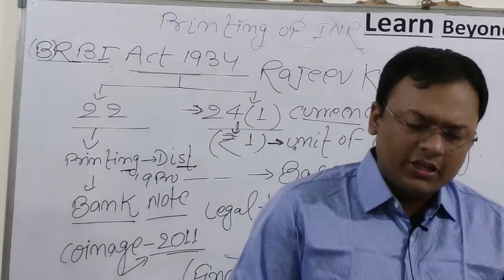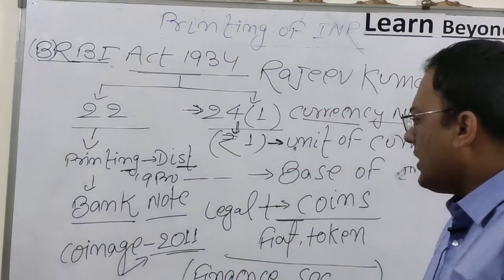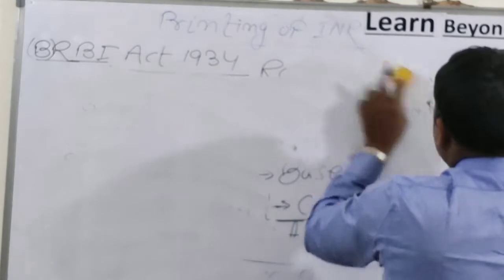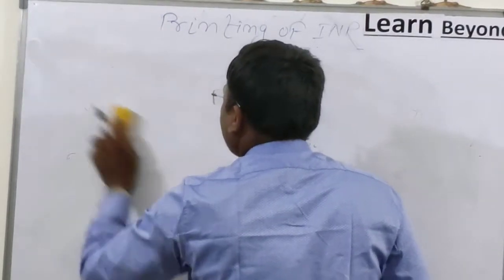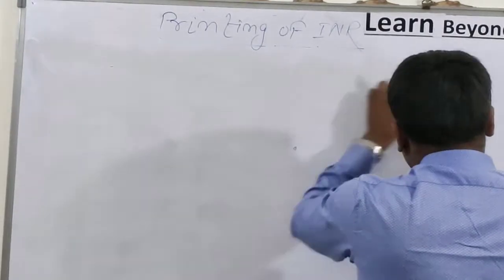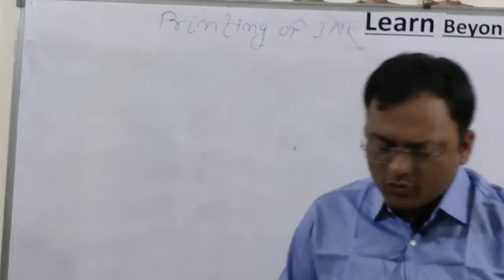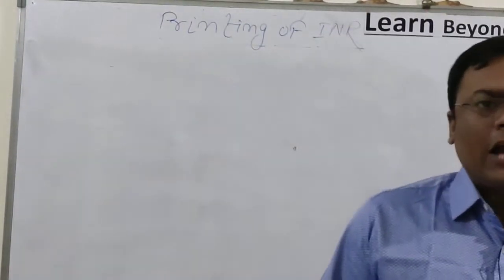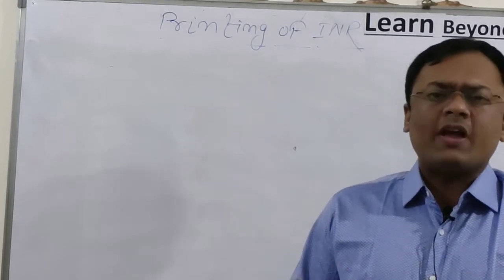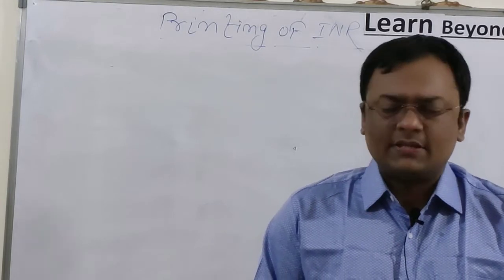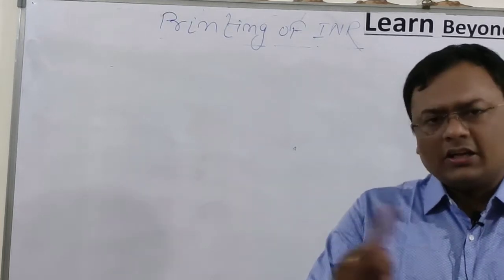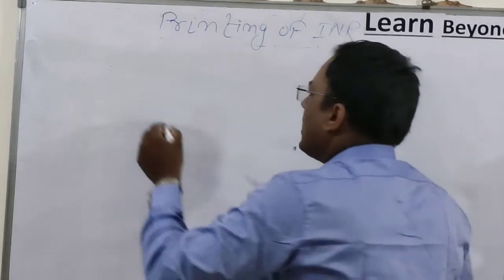Moving ahead: RBI prints two types of currency — bank notes (paper notes) and coins. An important fact is that coins printing is NOT the role of RBI. All coins and the one rupee note reach us through the Government of India. Other than the one rupee note and coins, all legal tenders are called bank notes.